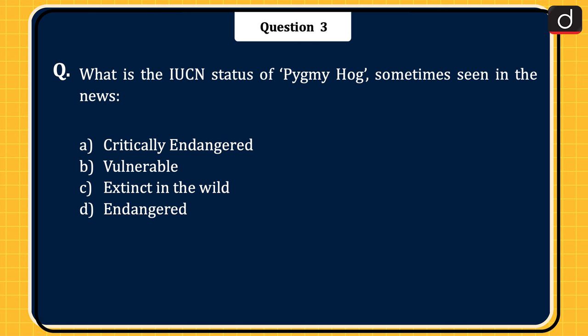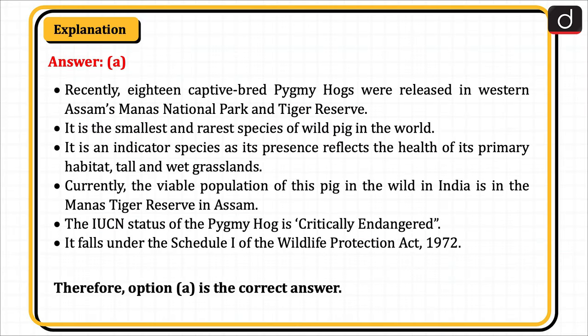The next question: what is the IUCN status of the pygmy hog, sometimes seen in the news? Critically endangered, vulnerable, extinct in the wild, or endangered? The correct answer is option A, critically endangered. Recently, 18 captive-bred pygmy hogs were released in Western Assam's Manas National Park and Tiger Reserve. It is the smallest and rarest species of wild pig in the world. It is an indicator species, as its presence reflects the health of its primary habitat — tall and wet grasslands. The IUCN status is critically endangered, and it falls under Schedule 1 of the Wildlife Protection Act 1972. Therefore, option A is the correct answer.